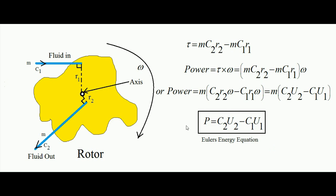Euler's energy equation is derived simply from the concept that the rate of change of angular momentum of the fluid equals the torque on the rotor, and multiplying the torque by omega gives the power. This is the most general expression for energy interaction between the rotor and the fluid.